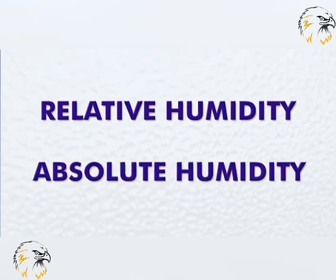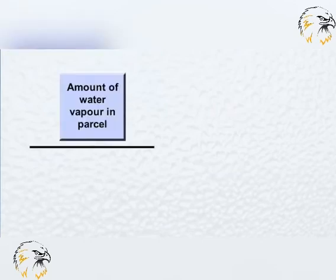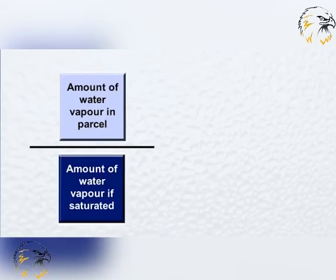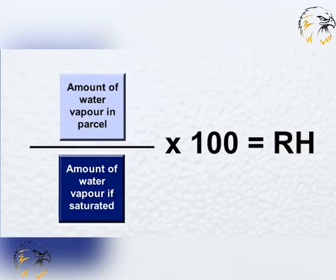We are now going to talk about humidity and its measurement. We can reference humidity with two specific terms: relative humidity and absolute humidity. Relative humidity is the percentage degree of saturation, or put another way, it is the amount of water vapour a body of air actually contains relative to the maximum amount it could hold, expressed as a percentage. A relative humidity of 100% is saturation.